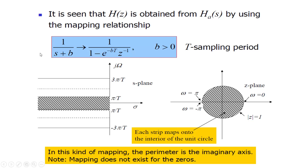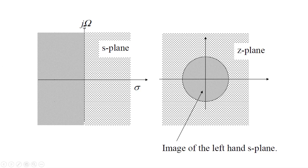There is of course the problem of aliasing. But in the bilinear transformation, we map the complete j-omega axis — the imaginary axis — inside the unit circle. So it will lead to a stable filter and there will not be any problem of aliasing.